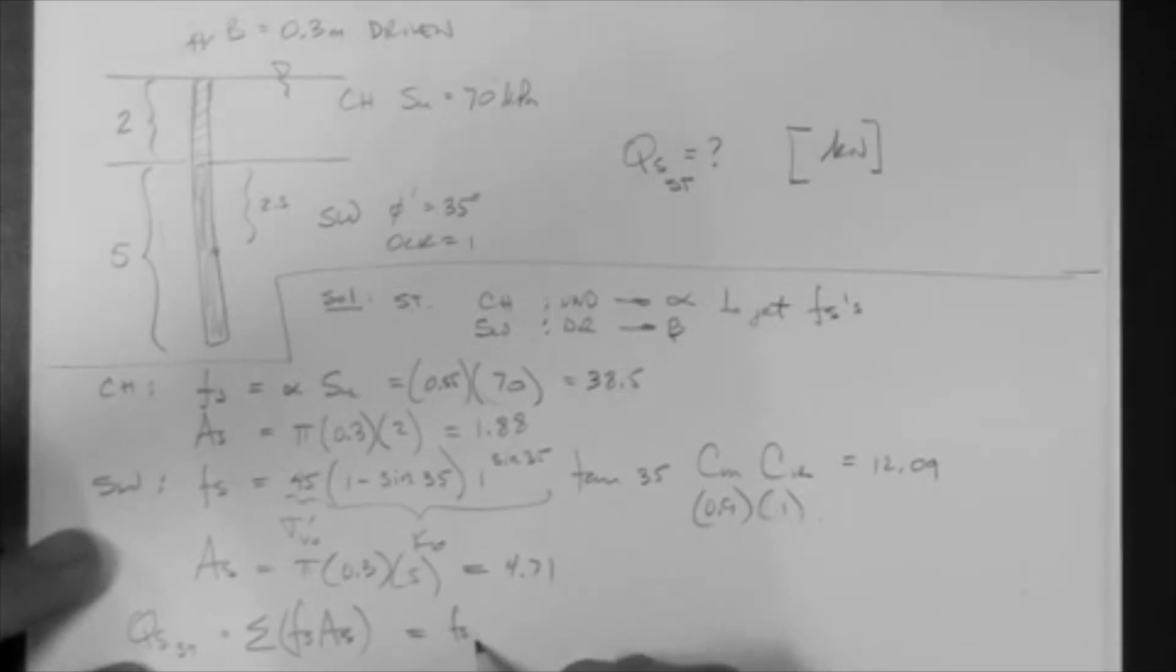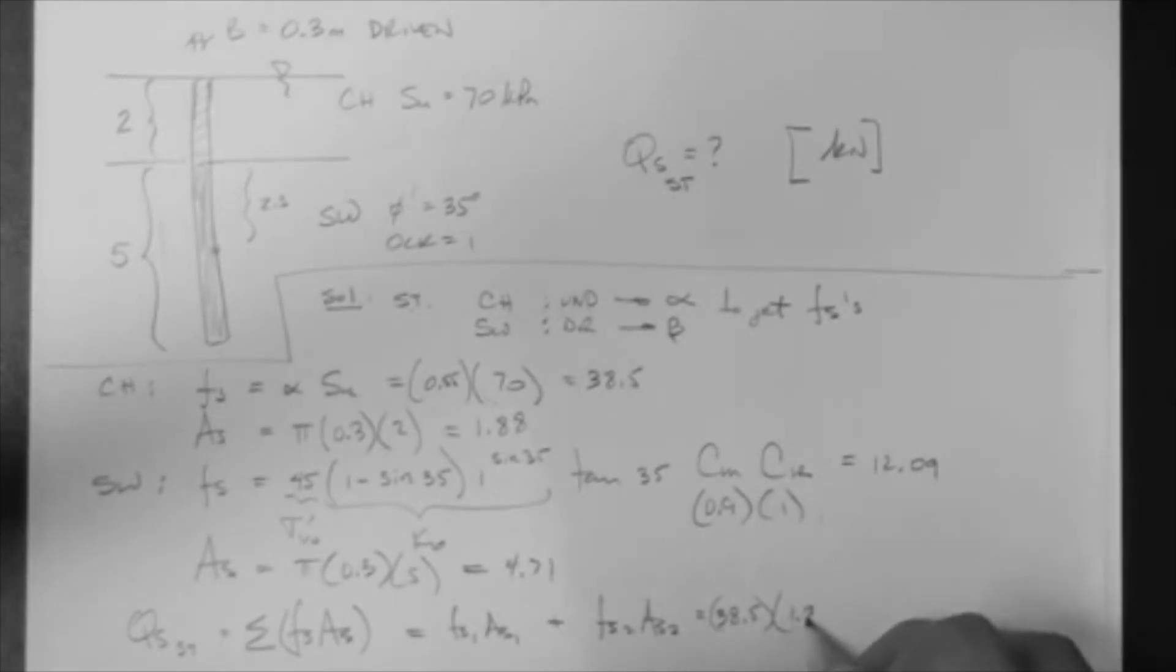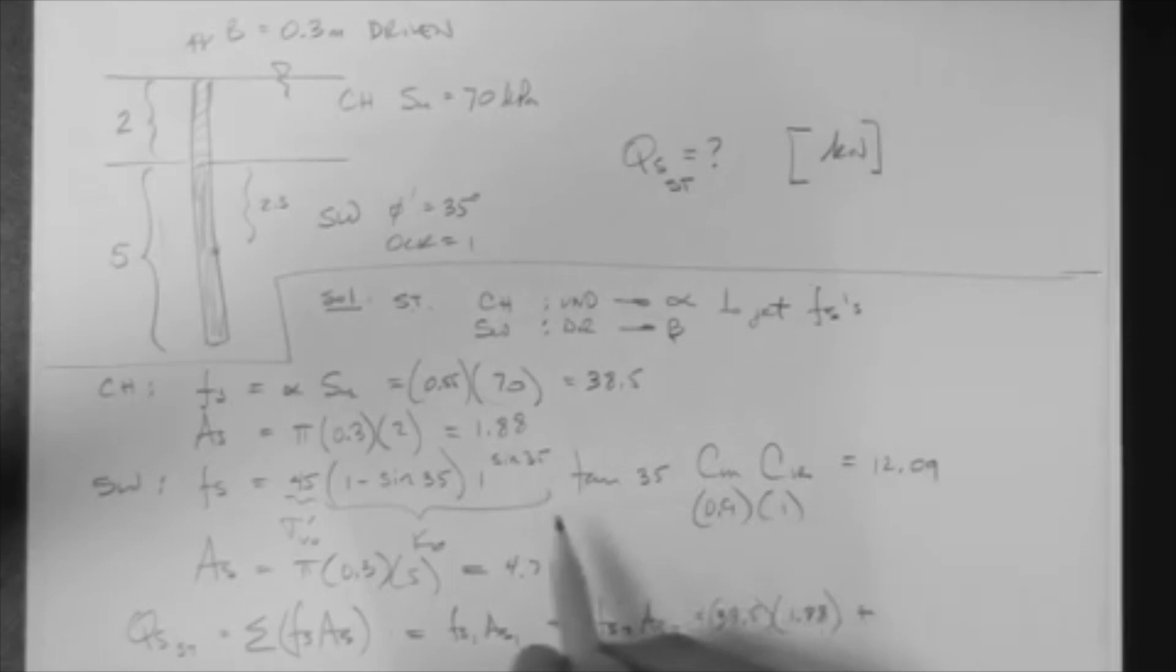Which is Fs1As1 plus Fs2As2, which is equal to 38.5 times 1.88 plus 12.09 times 4.71. I hope you can see that. And what's all this? Let's see. This is basically 57, and this is 73 or so. So this is 130 kilonewton.